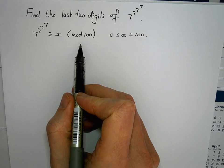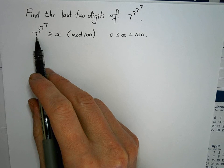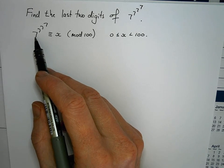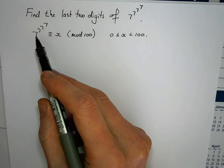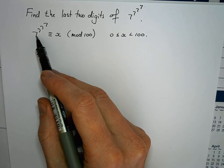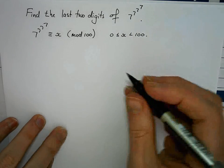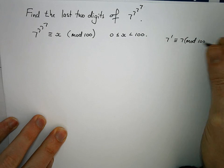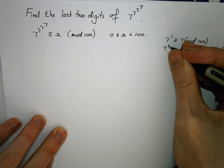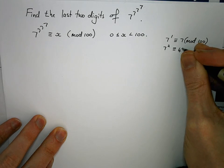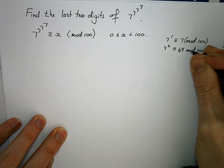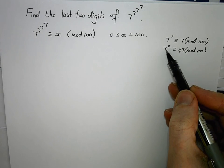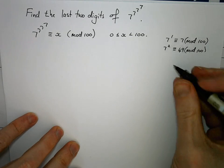To solve this congruence, I'm going to start looking at the powers of 7 and see if there's a nice pattern if I look at successive powers of 7 modulo 100, or maybe find a power of 7 that is particularly easy to work with modulo 100. So: 7 to the power of 1 is just congruent to 7 modulo 100. 7 to the power of 2 is 49, which is congruent to 49 modulo 100. Adding or subtracting multiples of 100 to 49 won't work very well.